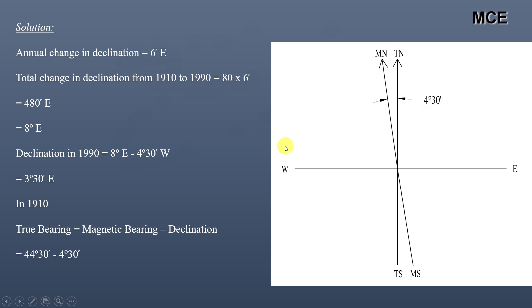The magnetic bearing in 1910 was 44°30'. The true bearing — measured with respect to true north — equals magnetic bearing minus declination. So true bearing = 44°30' minus 4°30', which equals 40°. This is the true bearing of the line in 1910. Importantly, the true bearing of a line remains constant.